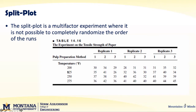They're going to do pulp preparation method one, and then randomize the easy-to-change factor — say run it at 225, then 200, 275, whatever — because they can change the temperature pretty quickly. So they're going to do a batch here. This pulp preparation method is a hard-to-change factor, and then they're going to run the temperature.